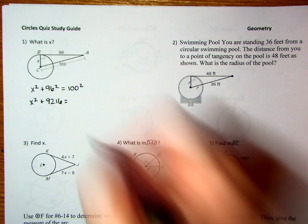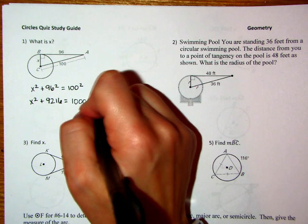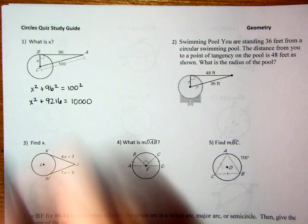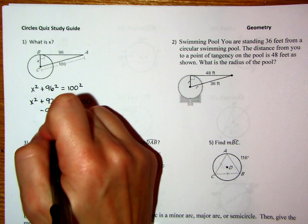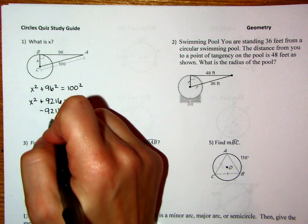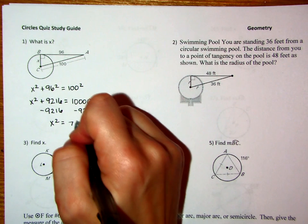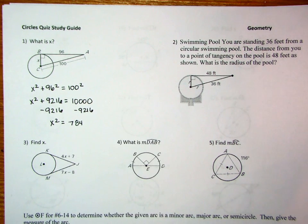We can do 96 squared in our calculator, so we have x squared plus 9,216 is equal to, and then if you need to, you can do 100 squared in your calculator, which would be 10,000. And then what you'll do is subtract 9,216 from both sides. Those will cancel, leaving you with x squared equals. And when we subtract 9,216 from 10,000, we get 784 equals x squared.